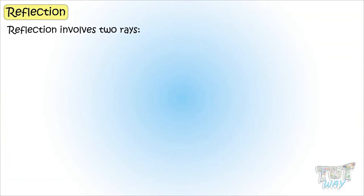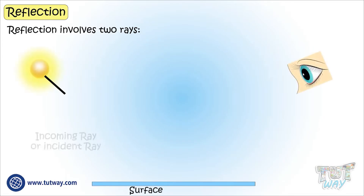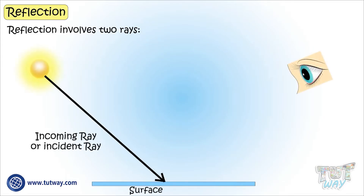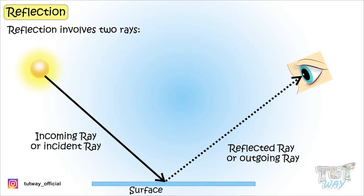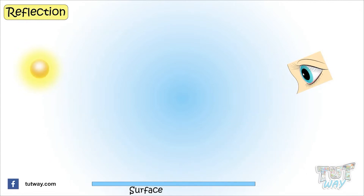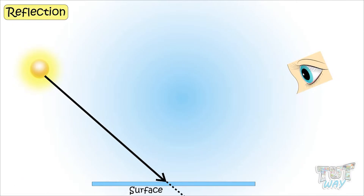Reflection involves two rays. One is the incoming ray and the other one is the reflected ray, or the outgoing ray. When light falls on any surface, some is absorbed and some part of it is reflected back.